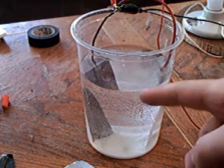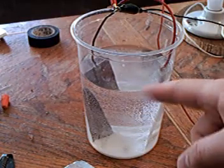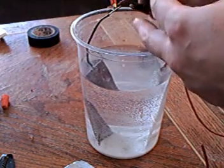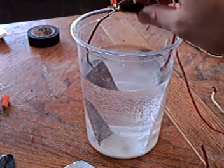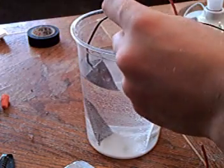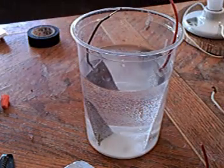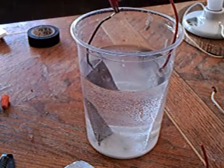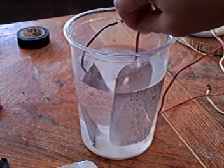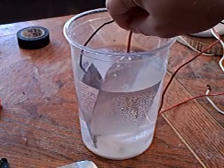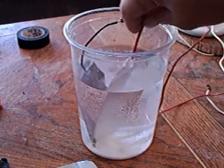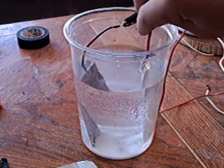In fact right now the current is on but you're not getting any bubbles, so let me show you what happens when I reverse the current. I'm going to take the negative off of the steel plate and I'm going to put it on the aluminum, and I'm going to take the positive off the aluminum plate and I'm going to put it on the steel. I'll show you that the current is on, you can see it sparking. See the sparks? It's only passing current if I touch one plate to the other.